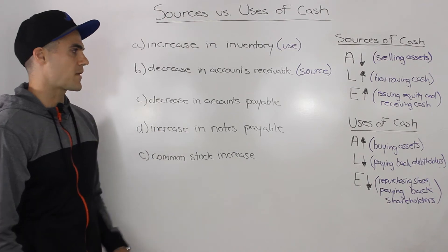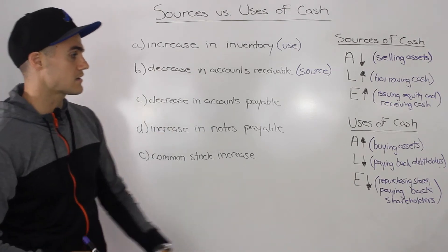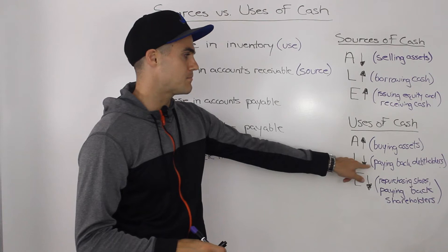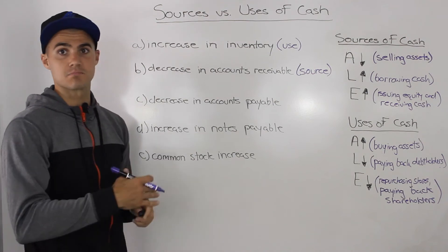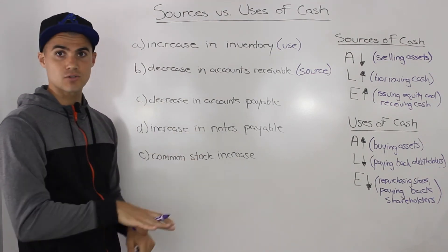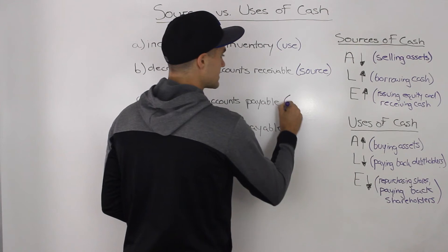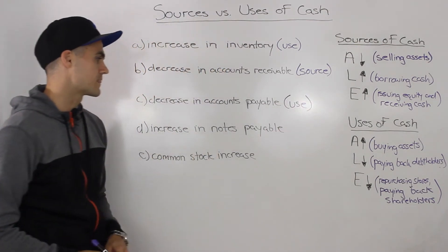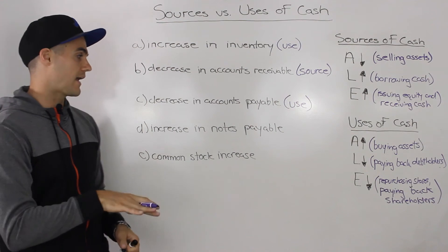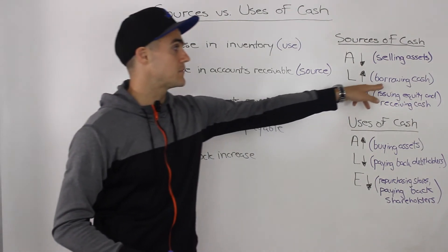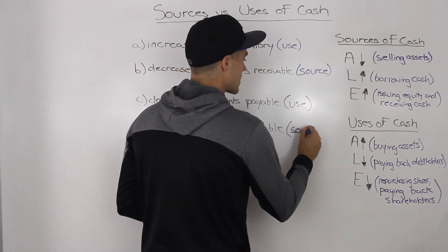Scenario C: a decrease in accounts payable. Accounts payable is a liability account, and if it is decreasing, you are paying back the money that you borrowed. Hence, that is a use of cash — you are spending cash to do that. Scenario D: an increase in notes payable. Notes payable, similar to accounts payable, is a liability account. If that is increasing, it means that you are borrowing money, hence that's a source of cash — you are receiving cash.